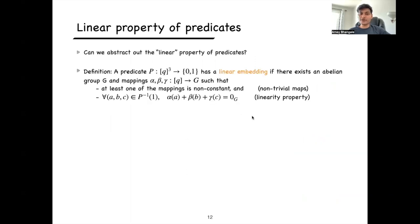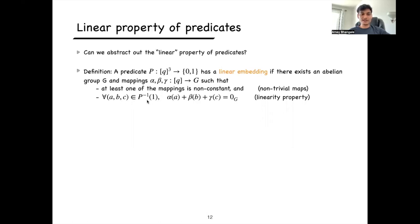Let's abstract out the linear property of predicates. We say a predicate P has a linear embedding if there exists an abelian group G and mappings alpha, beta, gamma from the domain to the group such that at least one mapping is non-constant, and for every satisfying tuple (a,b,c) in P, the corresponding group elements sum to the identity element of G. This definition generalizes to k-ary predicates with k maps.